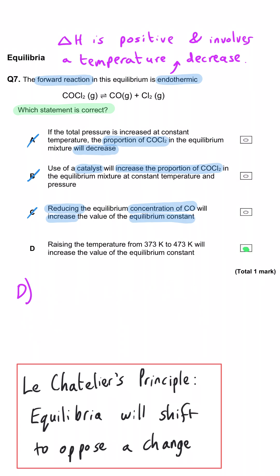And so D must be the correct answer. If we raise the temperature, the value of the equilibrium constant will increase. That's true. Equilibrium shifts right because the forward reaction is endothermic.